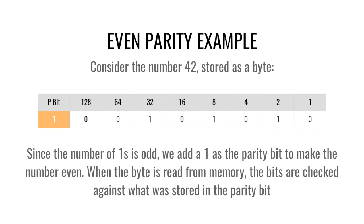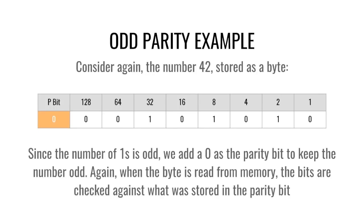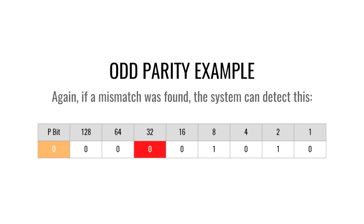Once the data is sent, if something goes wrong we can detect it because we're expecting even parity but we end up with an odd number of ones. The same concept applies to odd parity — you set the parity bit to 0 or 1 depending on how many ones are in the byte or word, and you can detect if something is wrong.